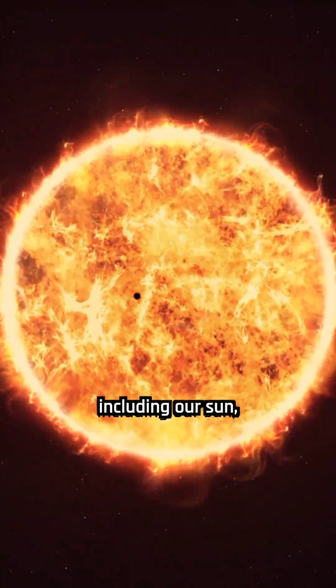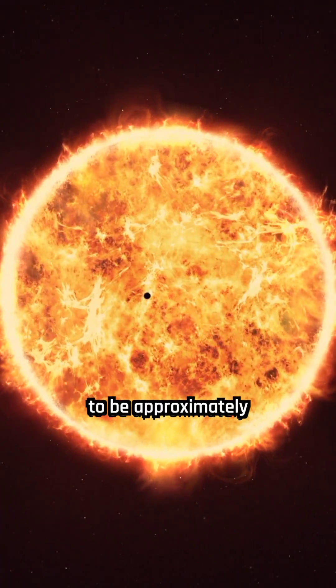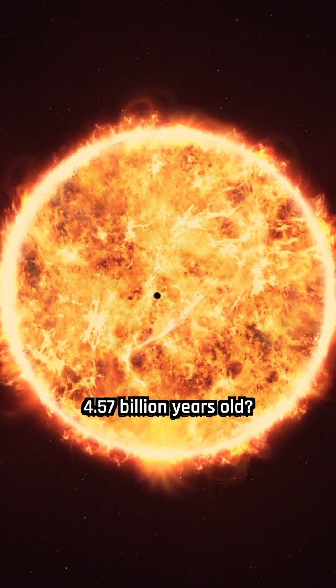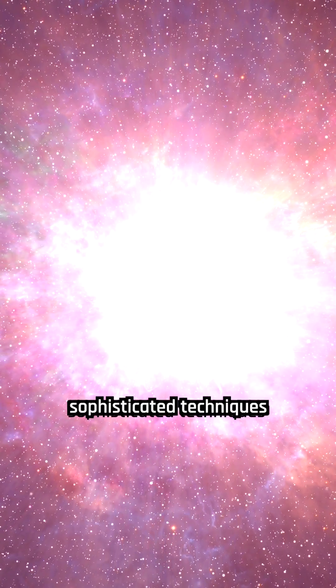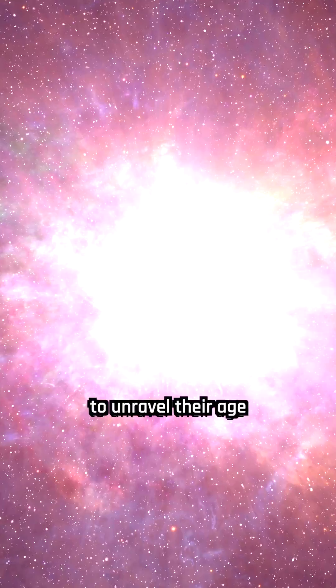Have you ever wondered how scientists calculate the age of stars, including our Sun, which is estimated to be approximately 4.57 billion years old? Despite being unable to sample stars physically, astronomers have developed sophisticated techniques to unravel their age and lifespan.